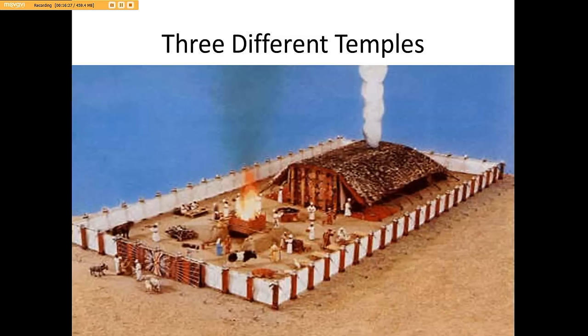With the Hebrews, there were three different temples. This is obviously a depiction of what it was when they were wandering in the wilderness. This is the picture of the inner court, the Holy of Holies, the showbread, etc.